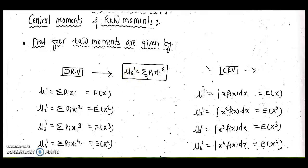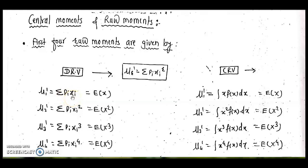For a discrete random variable, mu_r' = summation of p_i * x_i^r. So mu_1' = Σp_i*x_i, mu_2' = Σp_i*x_i², mu_3' = Σp_i*x_i³, and mu_4' = Σp_i*x_i⁴. The first two are already familiar: mu_1' is the mean, and mu_2' is used for variance via the formula variance = mu_2' − (mu_1')².